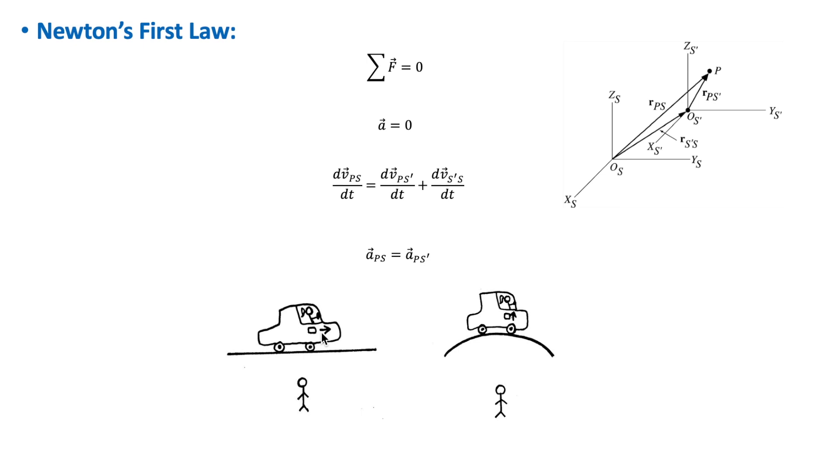In Jill's frame, which is an accelerated frame of reference, Newton's first law seems to be incorrect. But the situation is different for Jack, who is in an inertial frame of reference. In his perspective, the suitcase was initially moving with a constant velocity, and the net force acting on it was zero. When the car decelerates, the net force on the suitcase is still equal to zero.